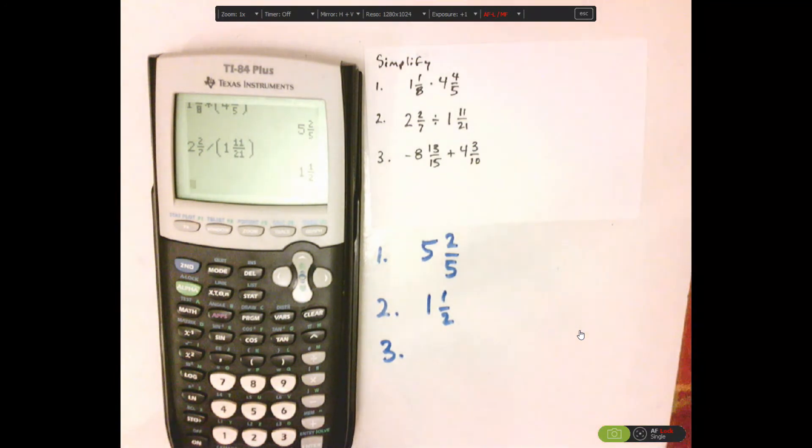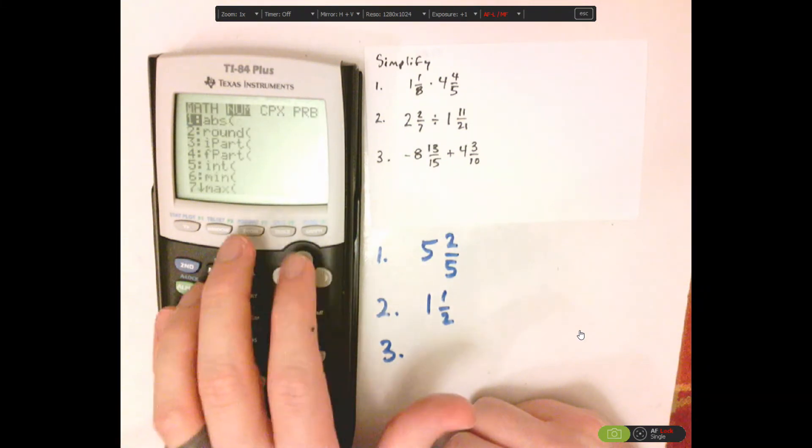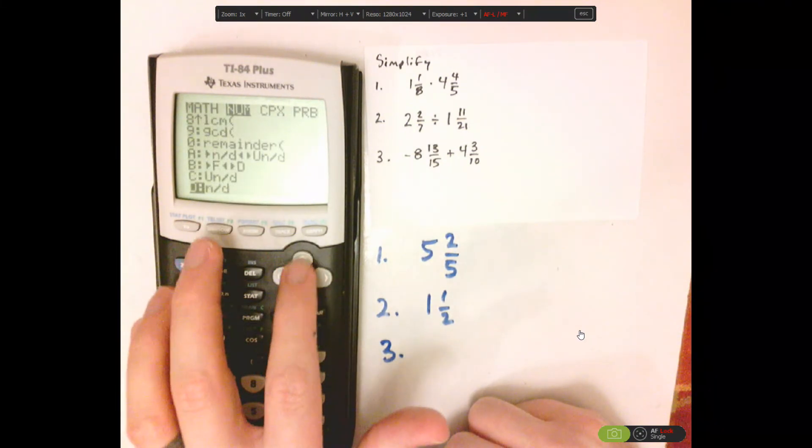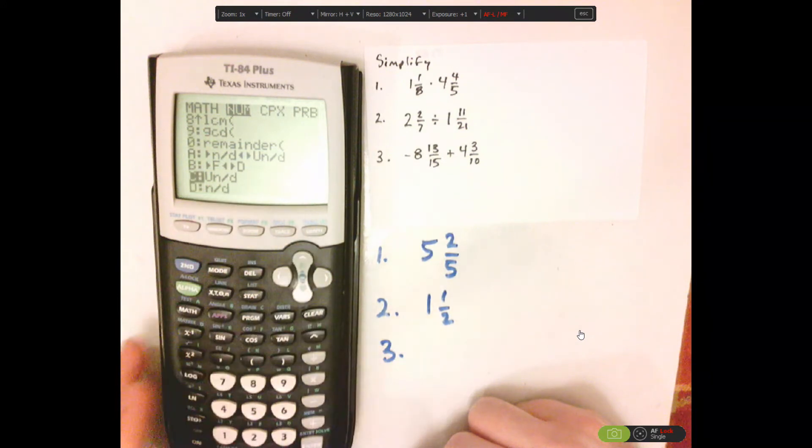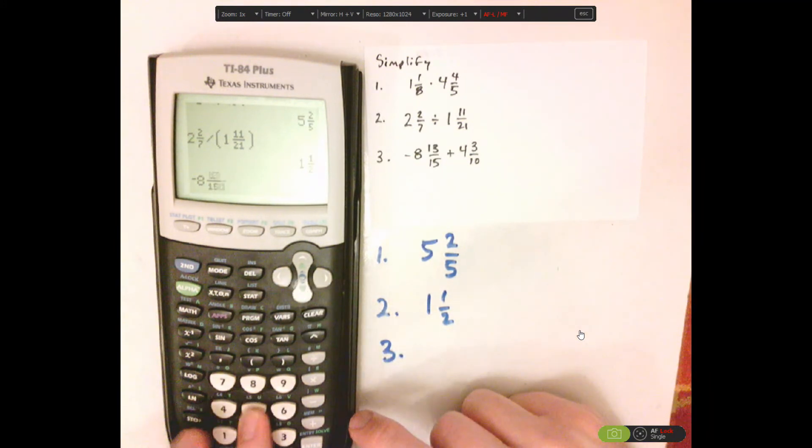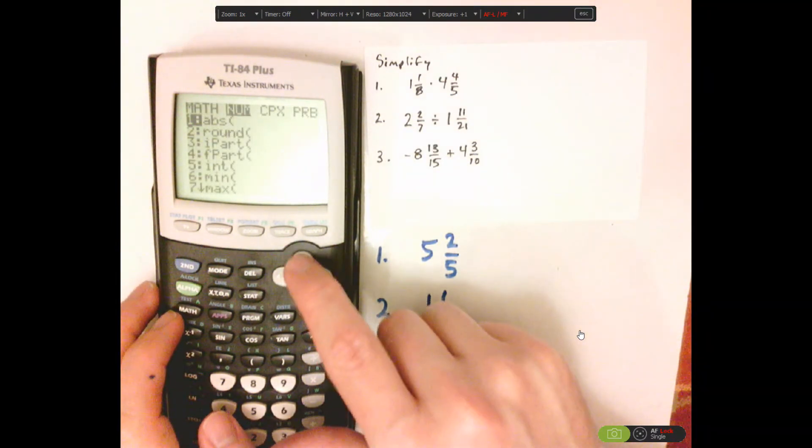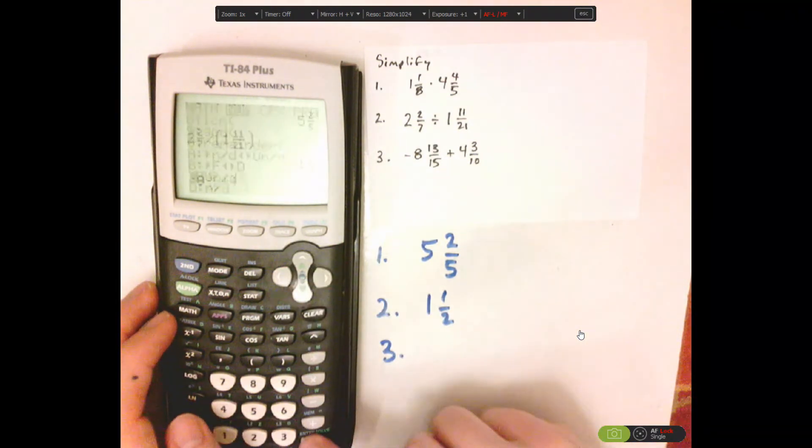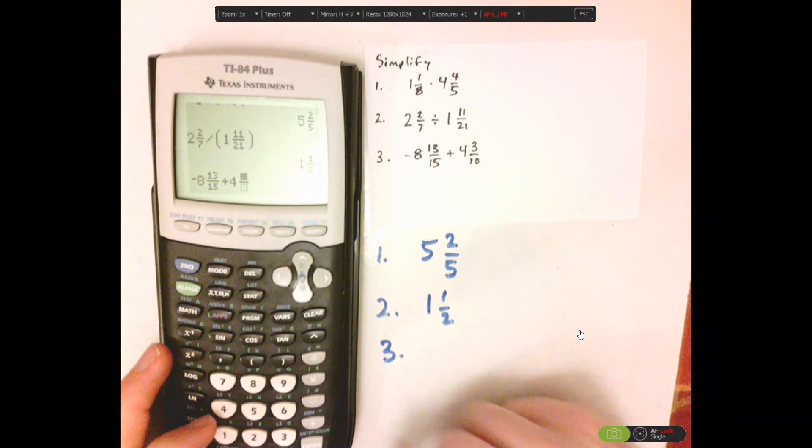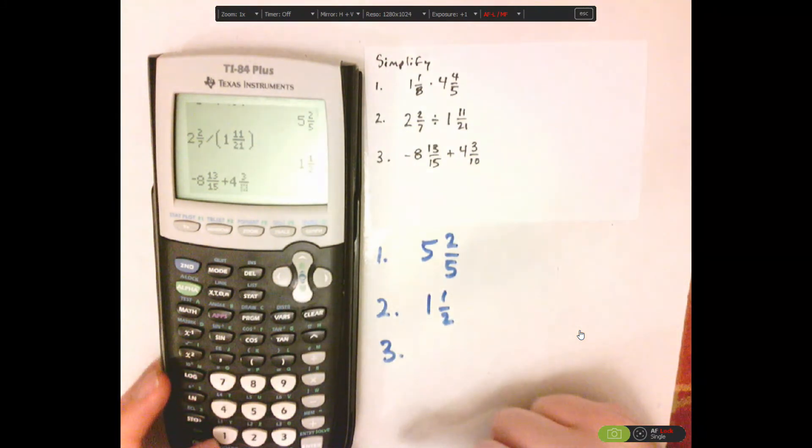Let's do the last one. Whenever you're doing a negative first, you want to use the negative key, so that's negative 8. Back to math, over, over, and then I did up. 13 fifteenths plus 4. Imagine trying to do this by hand. And then you have 4 and 3 tenths.